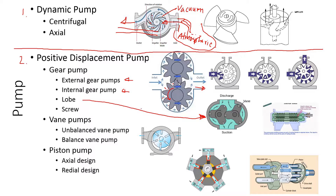The screw pump similarly traps fluid inside the screw grooves and pumps it through. The vane pump works the same way — instead of gears, you have vanes. Because of the rotational motion, when this thing rotates, the vanes extend outward due to centrifugal action. The vane width is labeled L. Fluid coming in is trapped between the vanes and pushed out — it's also a positive displacement pump.